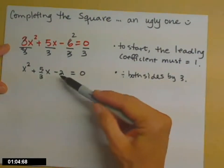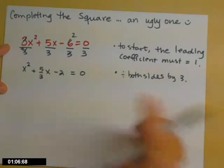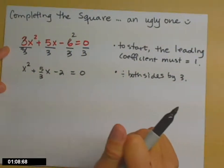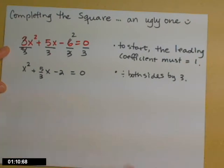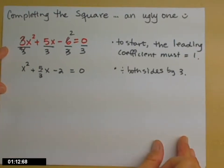So then the technique we were using is we're going to move our constant term over to the right, leave the space open to put our new constant term in so that we can get a perfect square trinomial on the left-hand side.